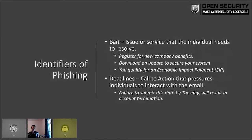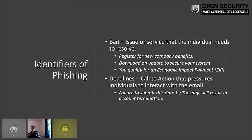Phishing typically has two parts. We have to give you some type of issue that pulls you in and gets you to engage — maybe you need new company benefits, need to download an update, or maybe you qualify for a stimulus check. These work because we put deadlines on them. On average, phishing campaigns only have 23 hours if deployed en masse. So we have 23 hours to get you to click and fill out your information or download that software.